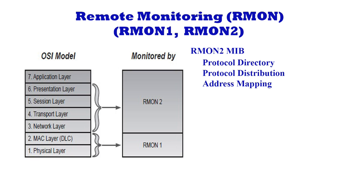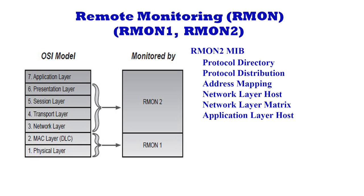Address translation not only helps the network manager but supports the SNMP management platform and leads to improved topology maps. Network Layer Host: provides network host statistics. Network Layer Matrix: stores and retrieves network layer statistics for conversations between sets of two addresses. Application Layer Host: provides application-layer host statistics. Application Layer Matrix: stores and retrieves application layer statistics for conversations between sets of two addresses.